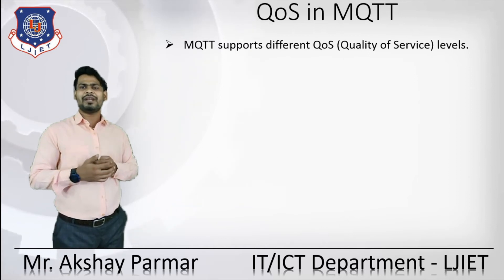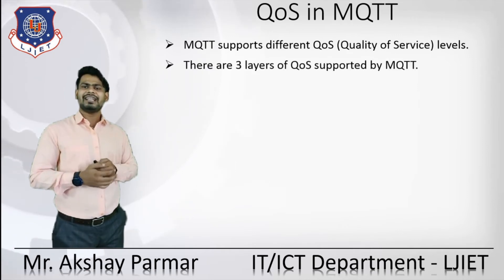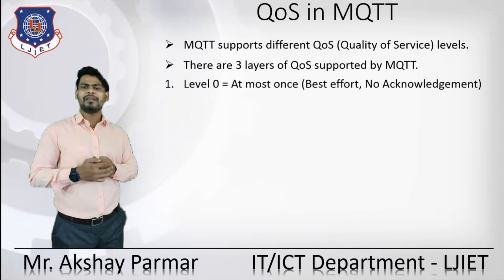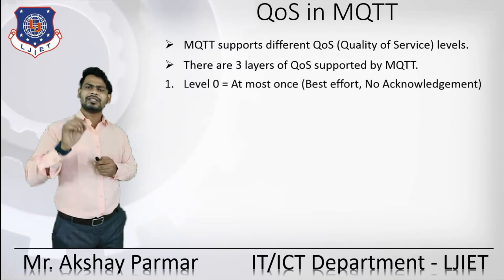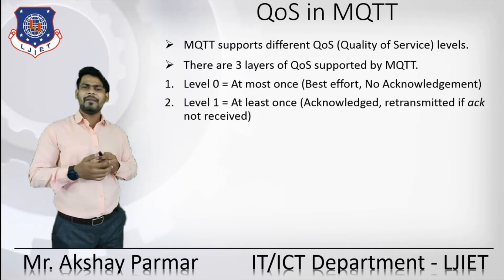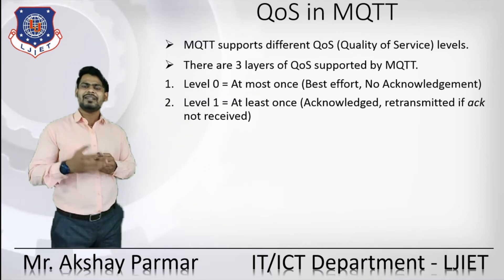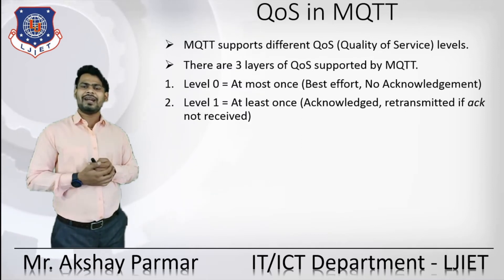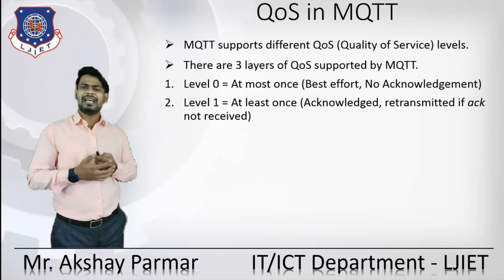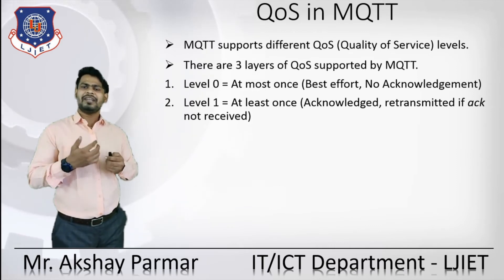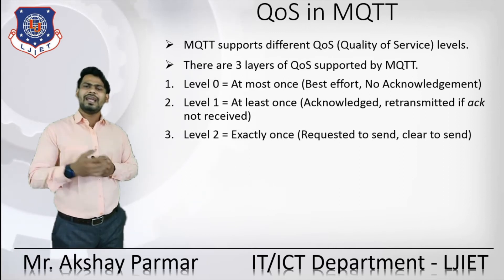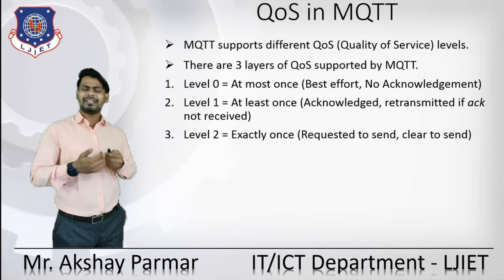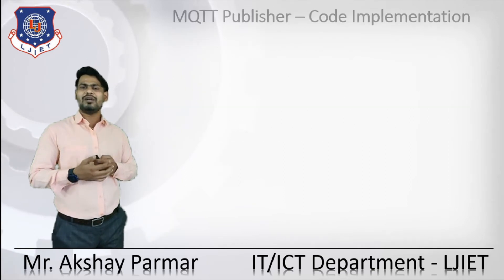MQTT supports different kinds of Quality of Service (QoS). There are three QoS levels. Level 0 — 'at most once': best effort is made and no acknowledgement is required. Level 1 — 'at least once': the message is acknowledged and retransmitted if acknowledgement is not received. Level 2 — 'exactly once': the message is sent and, after reaching the destination, a clearing is also performed.